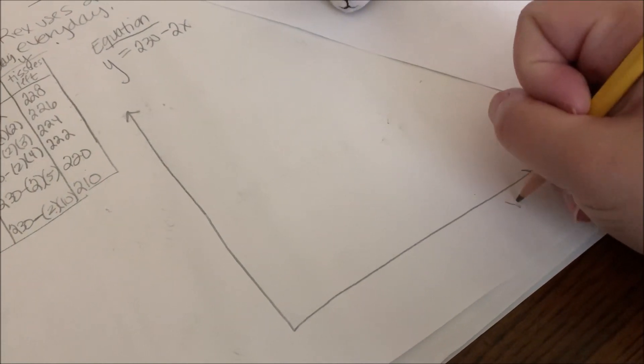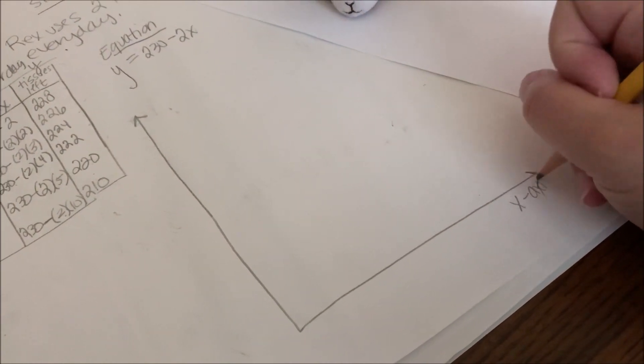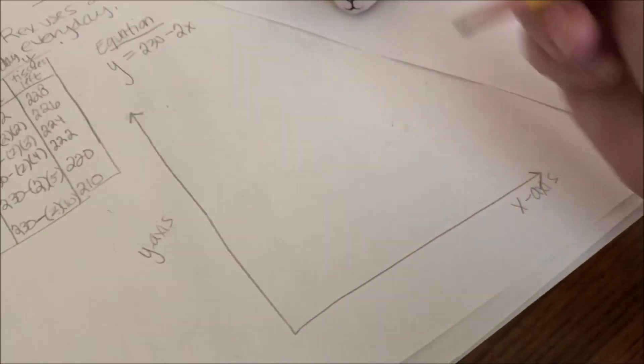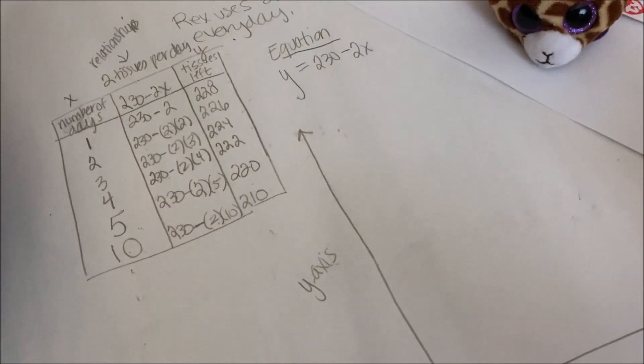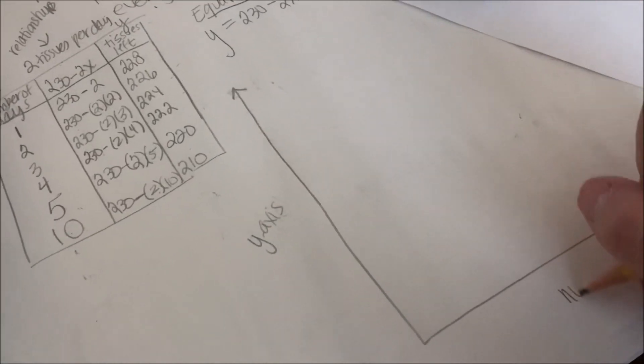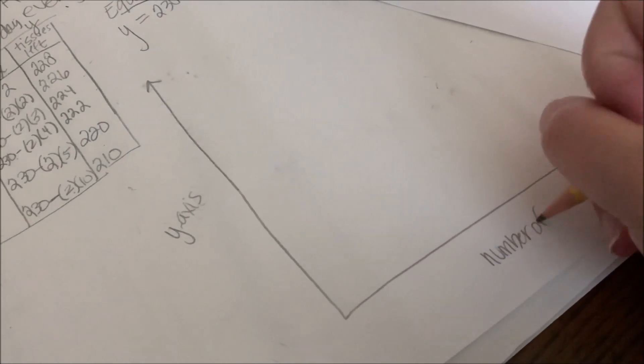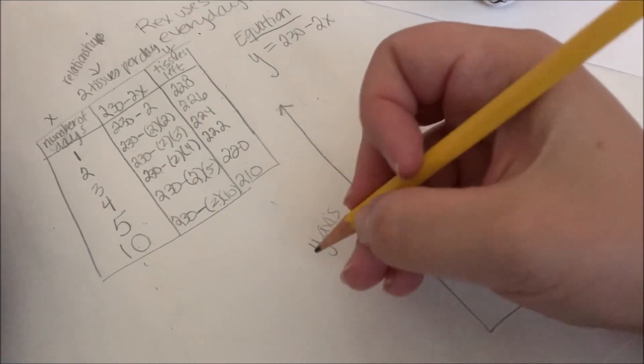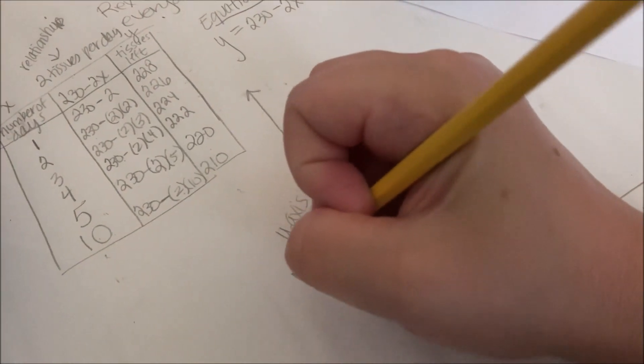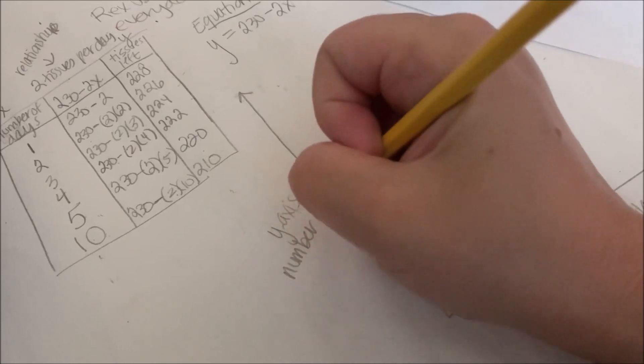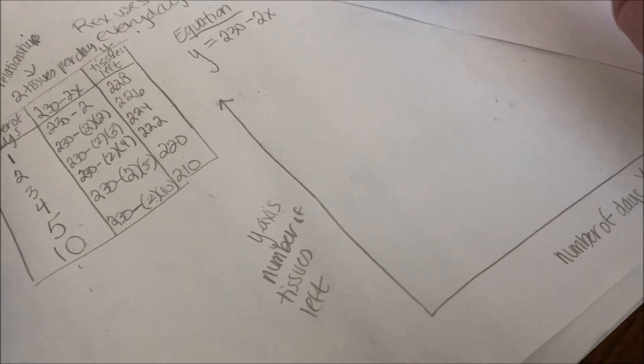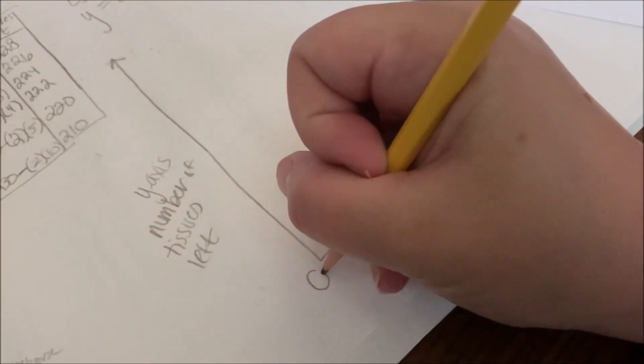So this is going to be my x-axis. And over here, I have my y-axis. The x-axis is the number of days. And my y-axis is the number of tissues left. And here I have zero.